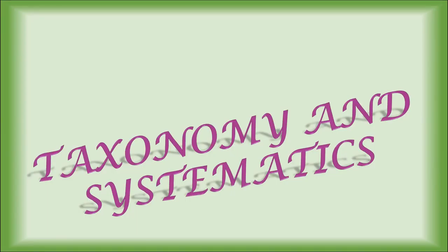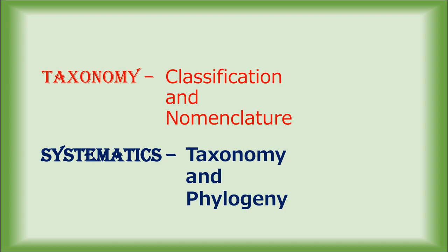Hello students, now we will learn a new lesson that is Taxonomy and Systematics in Botany. The word Taxonomy is derived from Greek which means arrangement. Organisms are classified based on their features and they are arranged according to rules and laws. Taxonomy can be defined as the science that deals with the study of classification including the basis, principles, rules and procedures.